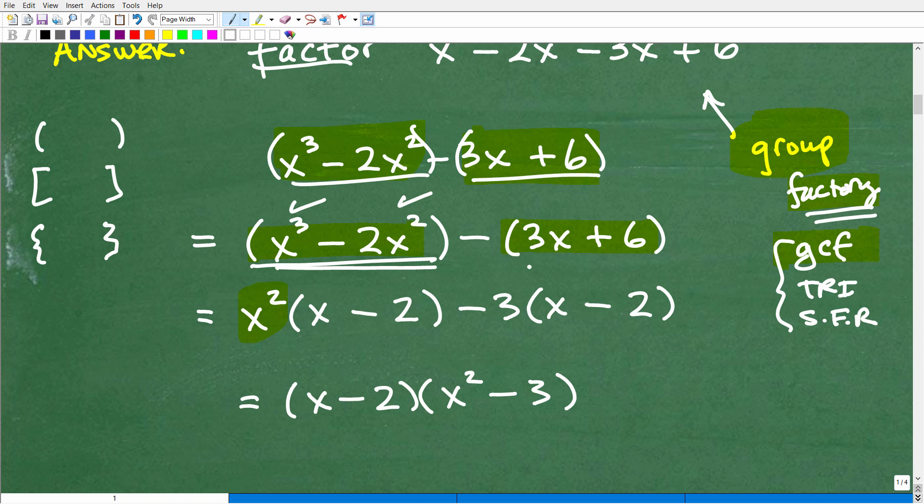And then over here, I can factor out a 3, because a 3 is the greatest common factor between these two terms. Now, be careful here. This is a negative 3 right there. This is a negative 3x. So I can factor out this negative 3 times this x times this is going to be negative 2, because negative 3 times negative 2 is a positive 6. So you've got to be very careful with the signs. And what you're trying to look for when you're doing group factoring is to end up with the same binomial in your two separate groups. So here, I have x minus 2 and x minus 2. That's excellent.